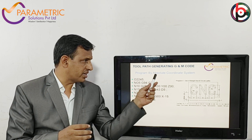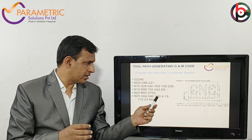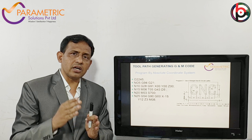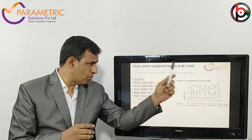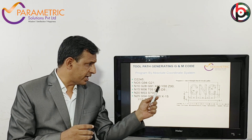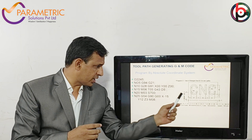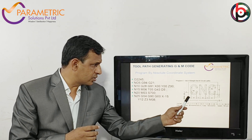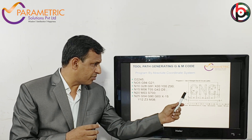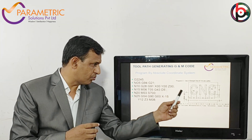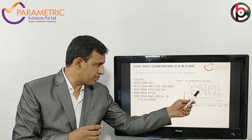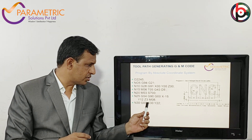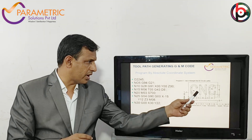G90 is the absolute coordinate system. G00 is rapid traverse — the tool moves from the home position (G28) to the starting position, which is X-15, Y12 mm, and Z3 mm above. This is the position where the tool comes from the home position to here. The next step moves to point number 1: X0, Y30, Z22 mm.